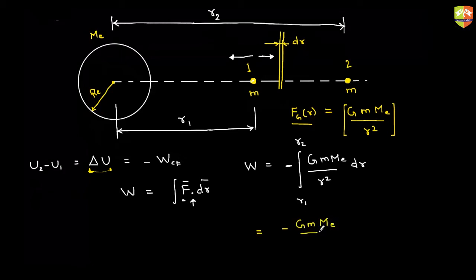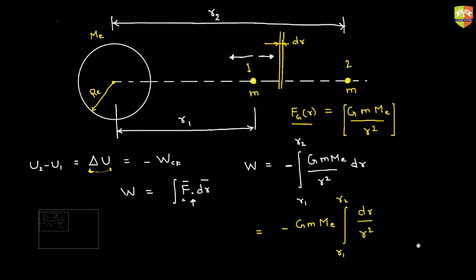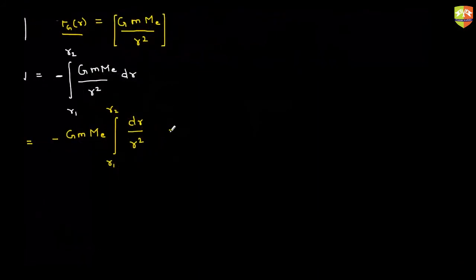This is a usual question asked in school: derive the expression for potential energy for gravitation in this kind of scenario. No doubts till now? All right — integral of dr by r squared.